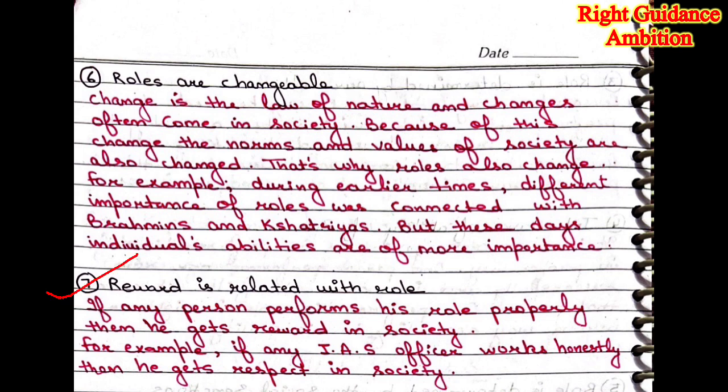7th point: reward is related with role. If any person performs their role properly, then they get a reward in society. If a person plays a role well and helps others and plays a role in society's welfare, then they get a reward. For example, if any IAS officer works honestly, then they get respect in society.